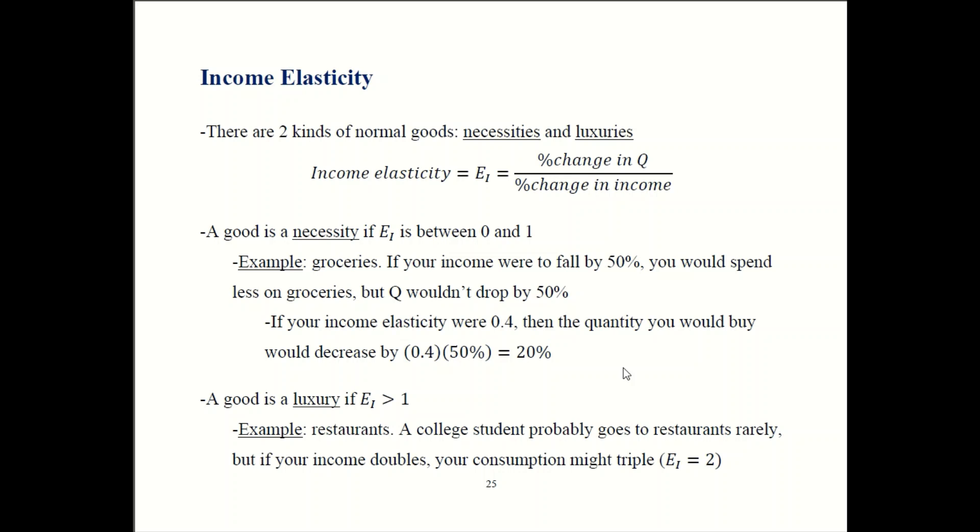If your income were to double, then your... Oh dear, I see a typo. If your income were to double, then your consumption would more than double. If your consumption triples, then your percentage in Q... Oh wait, that's actually right. Never mind. So if your consumption doubles, it's a 100% increase. And if your consumption triples, it's a 200% increase. So you have 200% over 100%. So that works out to 2. So there is no mistake on the slide. EI is 2.